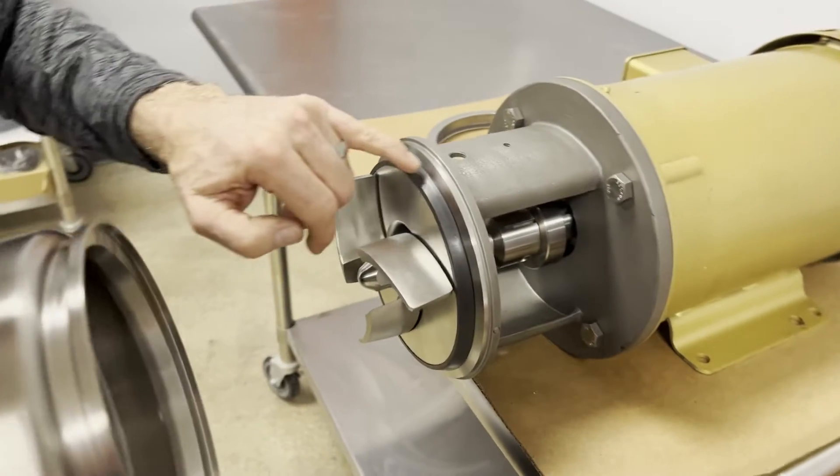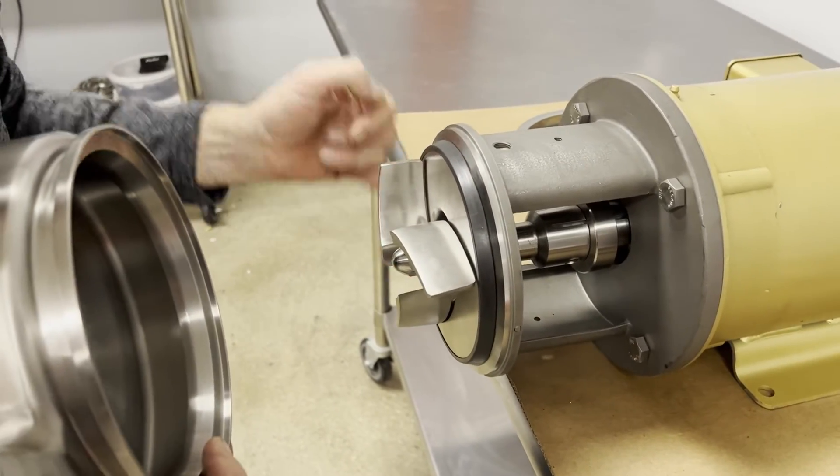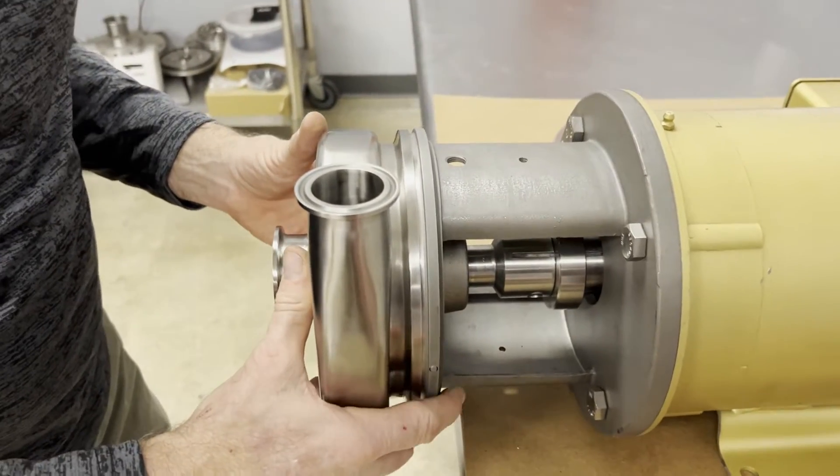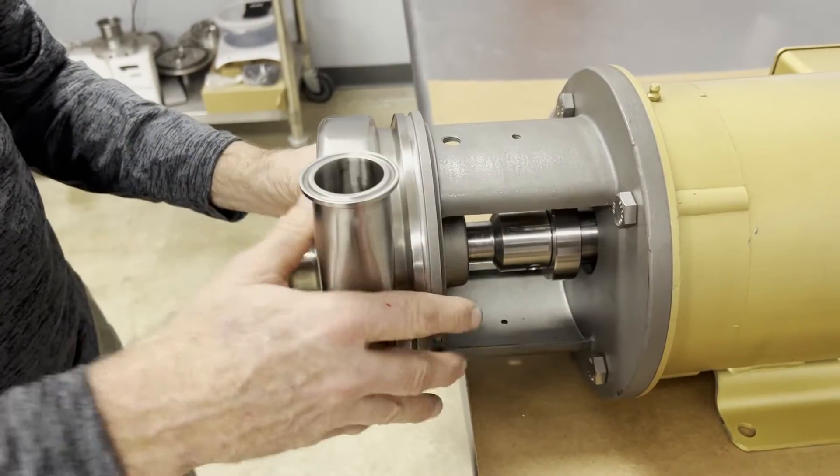Casing goes on. This is the only elastomer you don't lubricate. If you do that, you're going to have a little trouble getting this on straight. Now make sure your port is parallel.